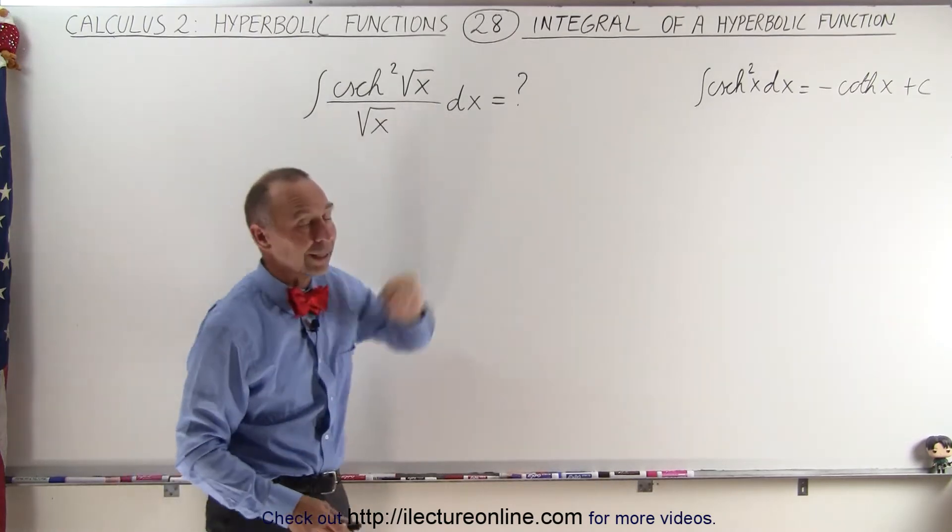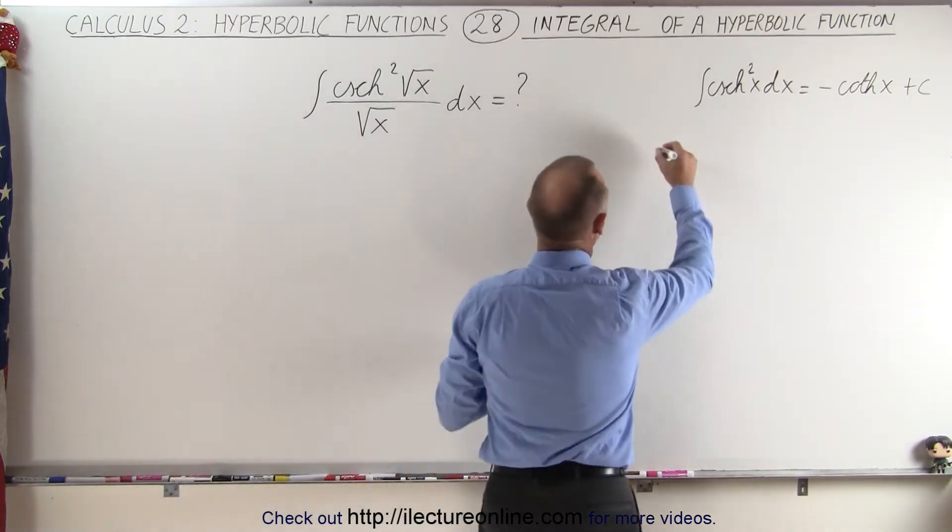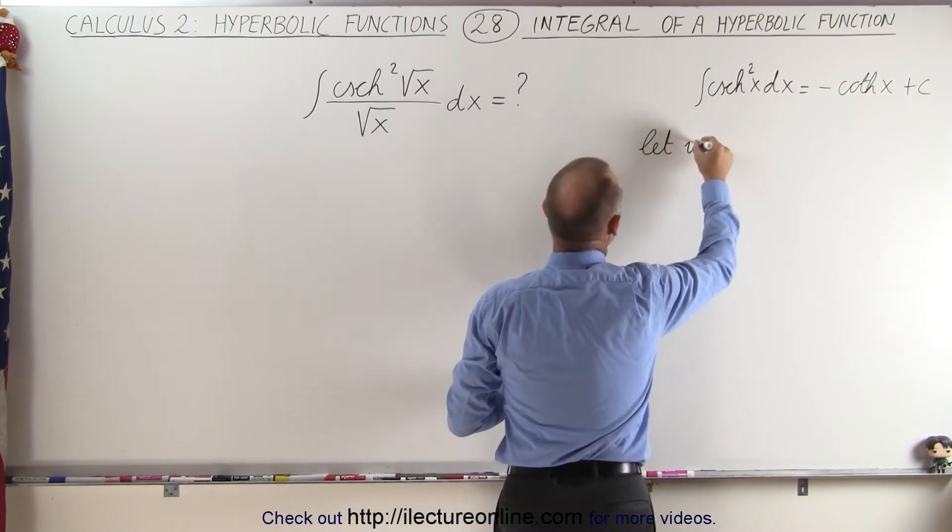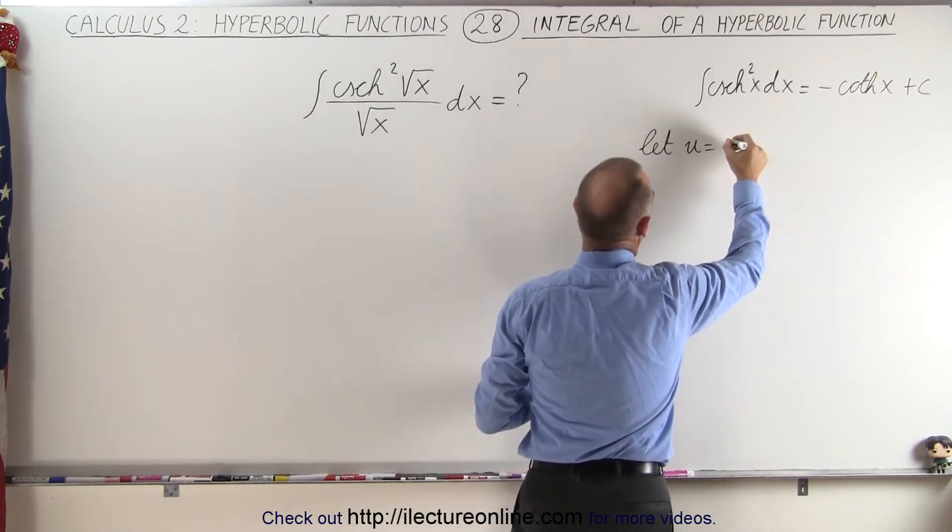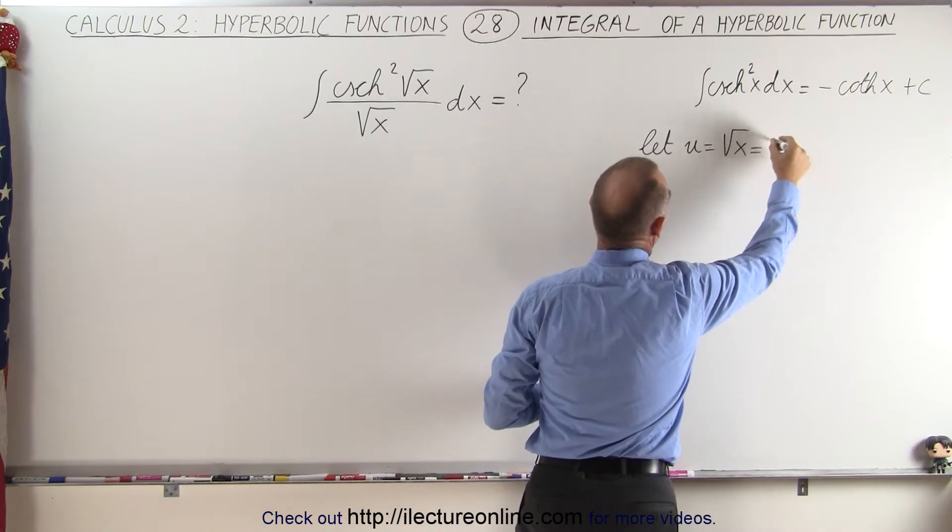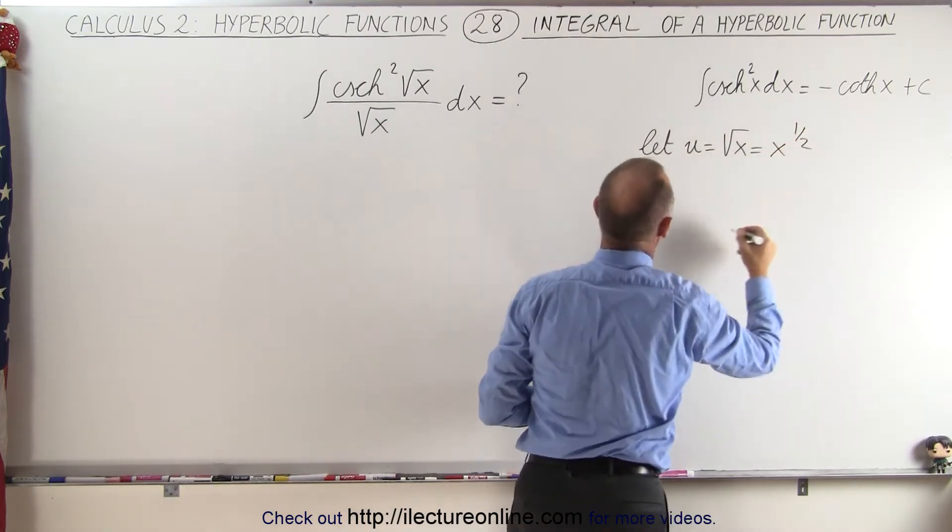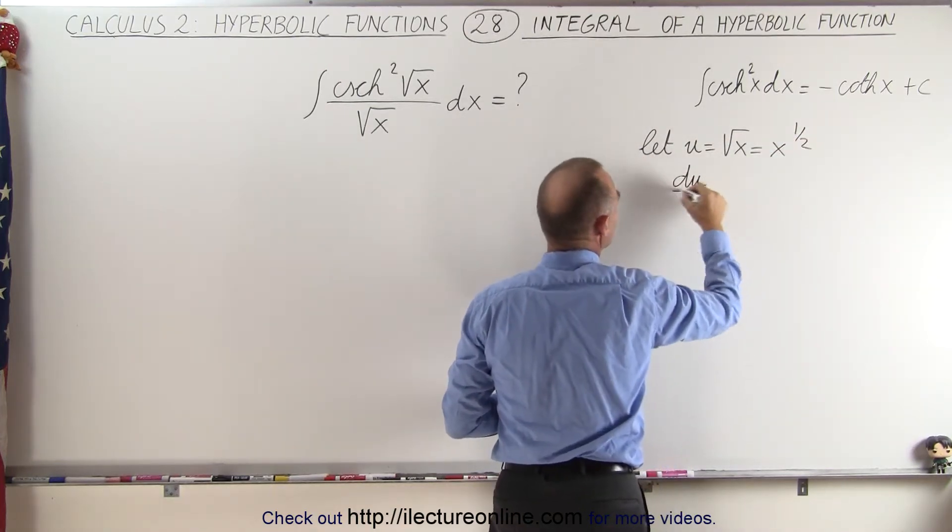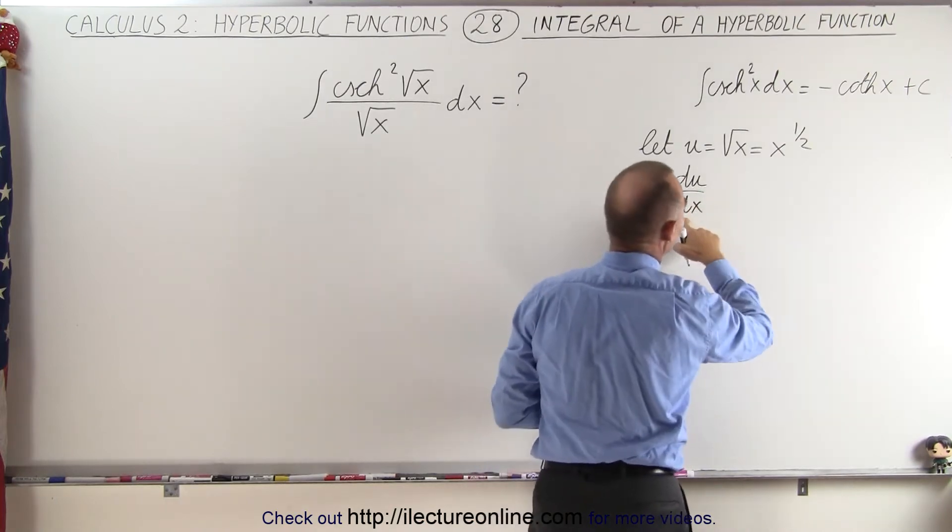Well we want to make it look like that so we're going to do a substitution. We're going to let u equal the square root of x, and of course that would be the same as saying x to the 1 half power, which means that the du/dx derivative with respect to x is going to be equal to 1 half x to the minus 1 half power.